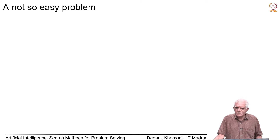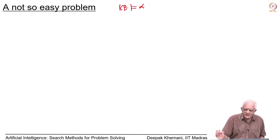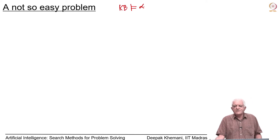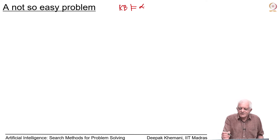One was the notion of entailment. We said that a knowledge base entails a sentence alpha, and the meaning of this is that if the knowledge base is true, then alpha must be necessarily true. That was the notion of entailment.